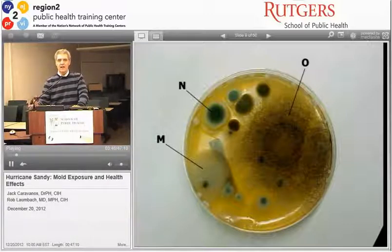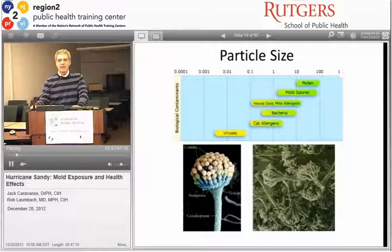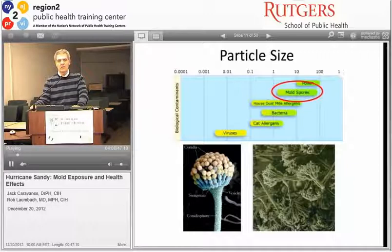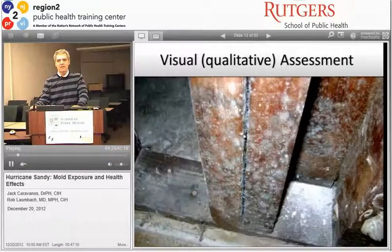The particle sizes are sort of ideal for inhalation—very small particles going past the nasal cavities into the upper and lower respiratory tracts. Just to keep this in perspective: mold spores have been here as long as, if not longer than, humans, so they are something we have evolved with. But there are situations where exposure can be very, very serious.